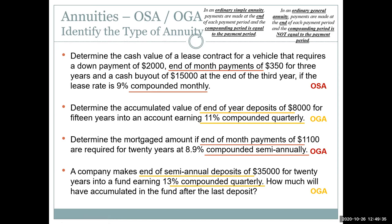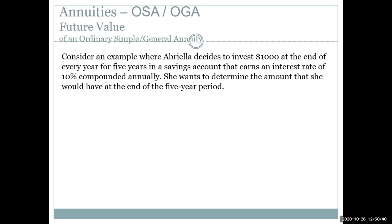In addition to identifying the type of annuity, we need to determine whether we're calculating a present value or a future value. 'Cash value' means what it would be in cash today — that's a present value. 'Accumulated value' means it's growing — that's a future value. 'Mortgaged amount' means money received today to buy a house — that's a present value. 'How much will have accumulated' is also a future value. So we need to track: what are we calculating, and what kind of annuity do we have?